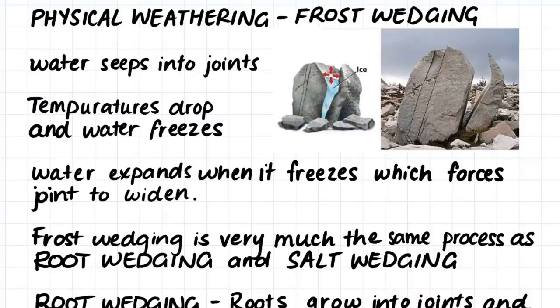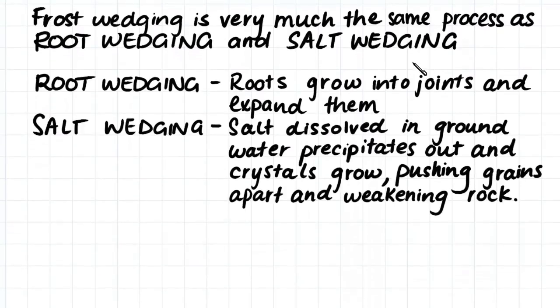Root wedging occurs when roots grow into the joints of a rock and expand them. Salt wedging occurs when salt which is dissolved in the groundwater precipitates out and crystals grow. These crystals can grow within the grains of the rock and push the grains apart, weakening the rock.